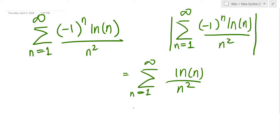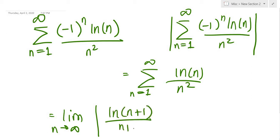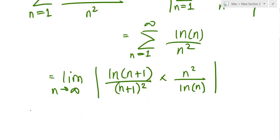Let's try the ratio test. The limit as n goes to infinity of the (n+1) term — that's ln(n+1) over (n+1) squared — multiplied by the reciprocal of the nth term, which is n squared over ln(n).